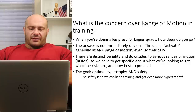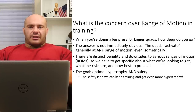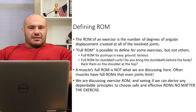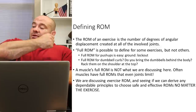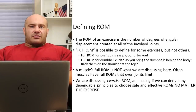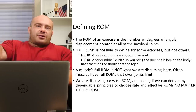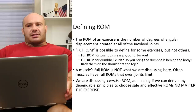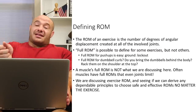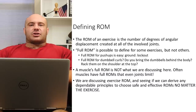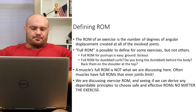What does 'range of motion' mean in the context of hypertrophy training? We're talking about exercise range of motion: the number of degrees of angular displacement created at all involved joints. If you move your elbow from here to here, that's maybe 30 degrees; from here to here, maybe 95 to 100 degrees. If you move your shoulder as well as your elbow, we count shoulder degrees and elbow degrees and add them up. Range of motion is the sum total of angular displacement across all joints — wrist, elbow, shoulder. That's a precise technical definition.